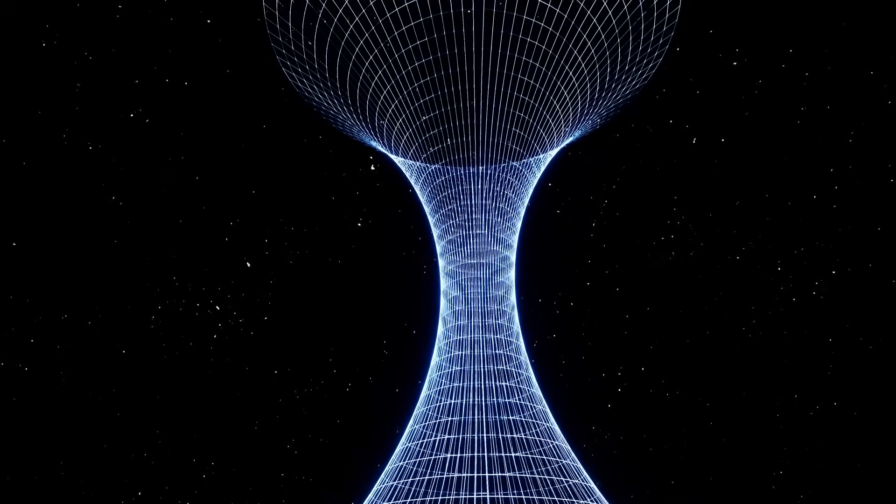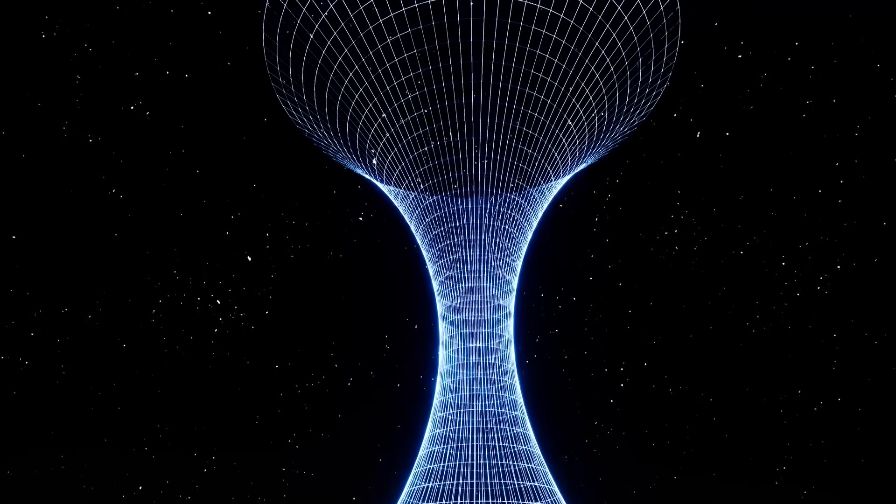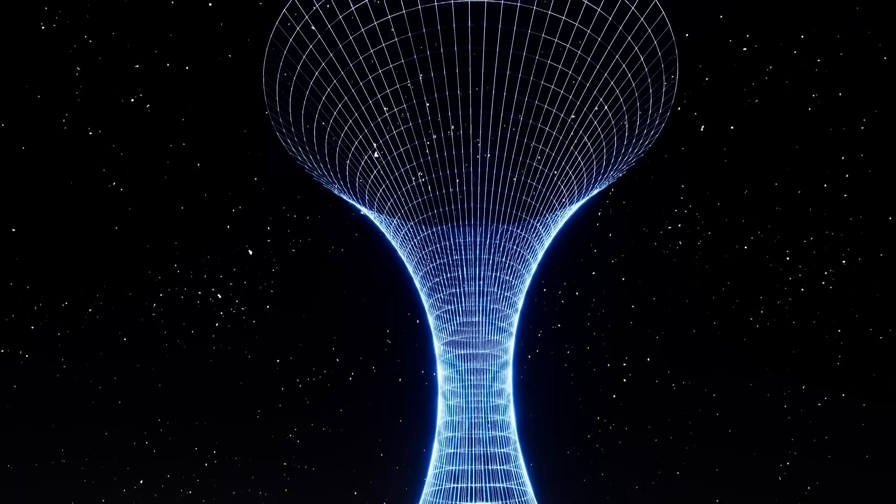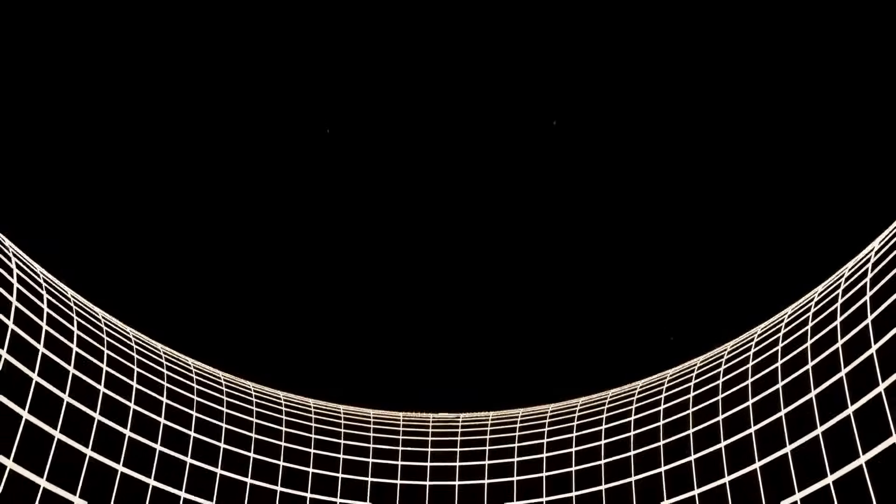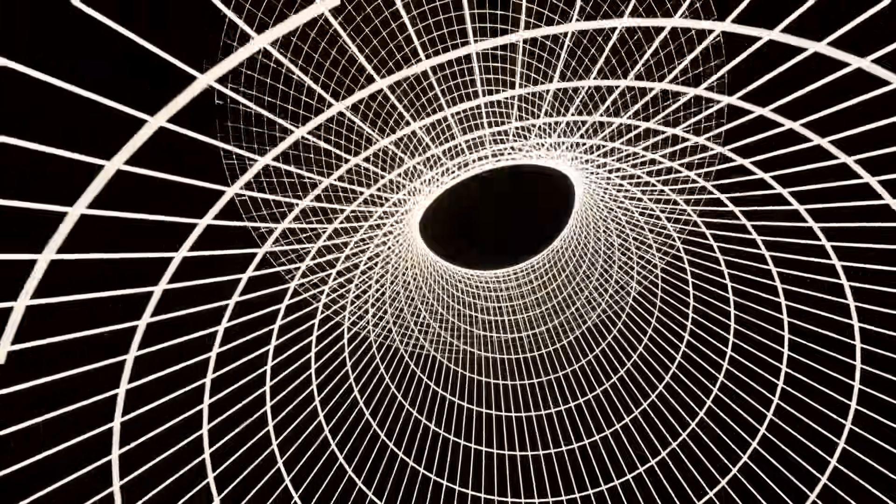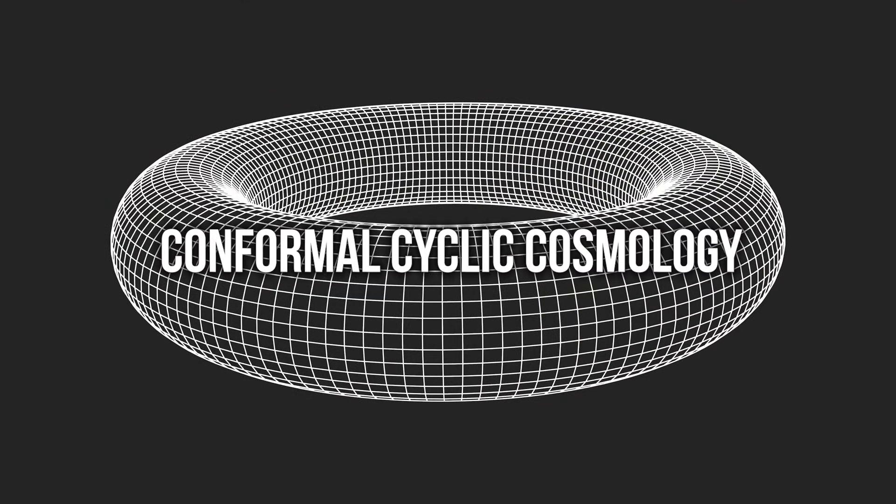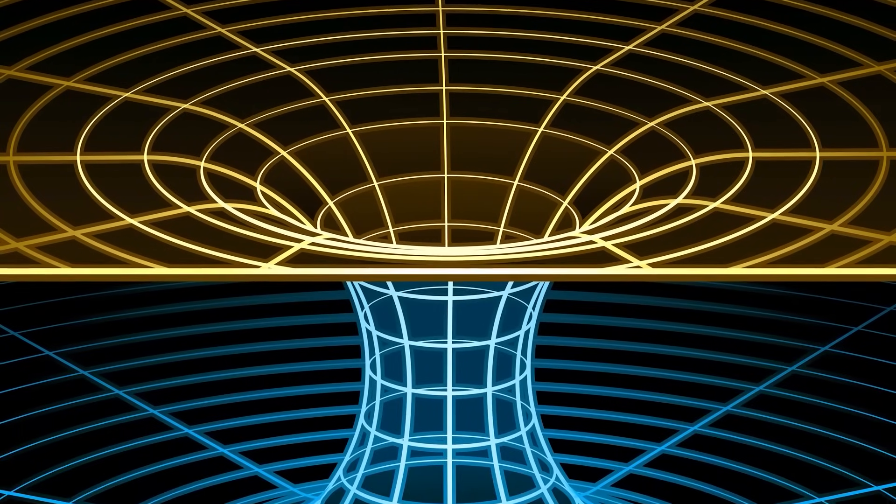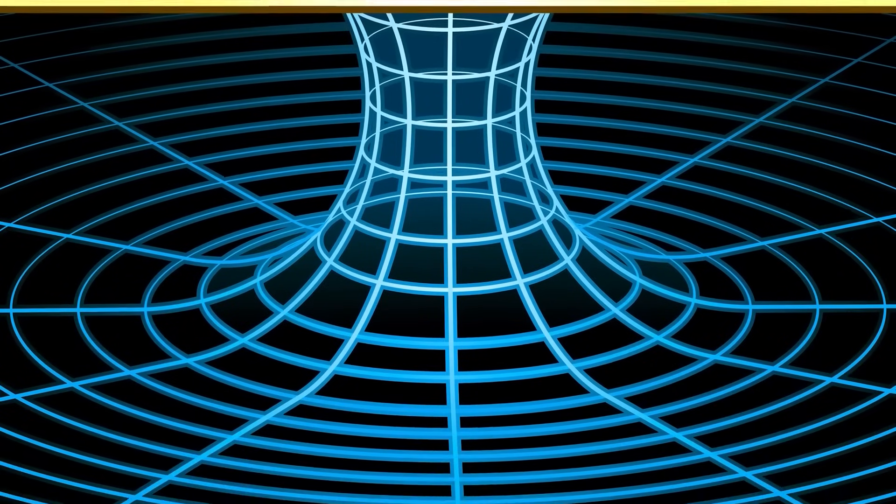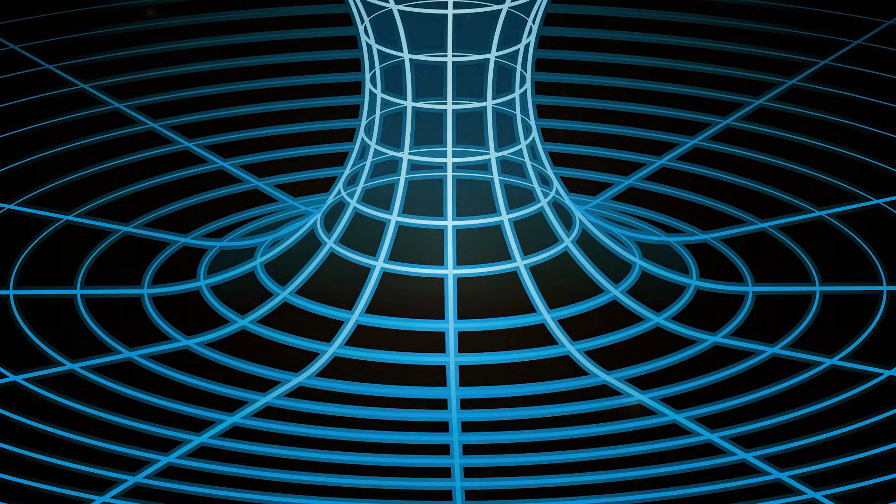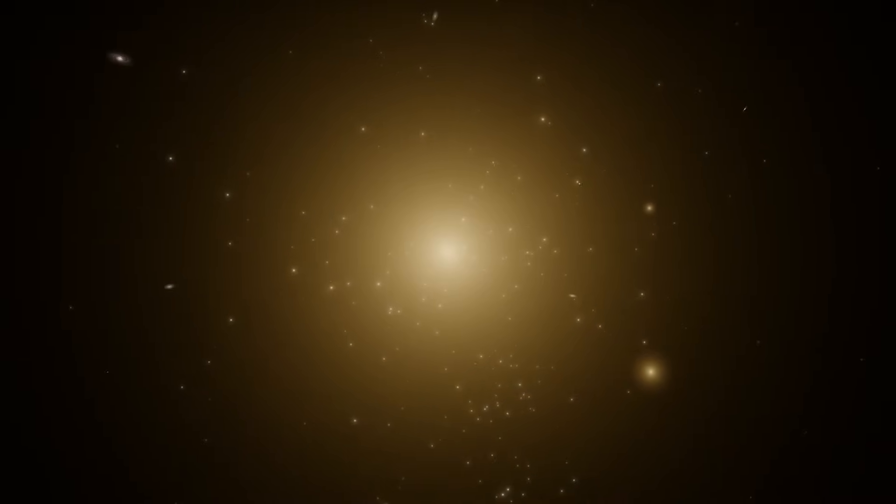Intriguingly, some scientists have theorized that the universe we see today might be the result of a cyclic repetition of the Big Bang, where the first cosmological event followed the collapse of a previous universe. This idea is known as conformal cyclic cosmology. Unlike the previous scenarios, this model relies on the concept of the universe having closed geometry, somewhat akin to the surface of a sphere.